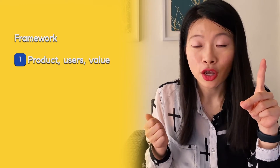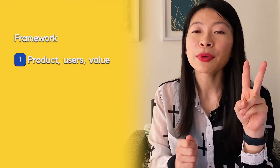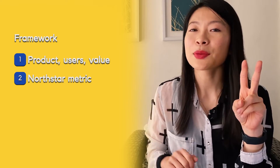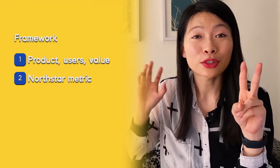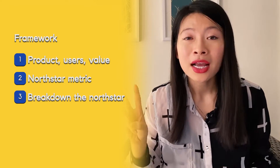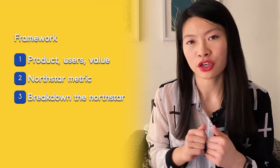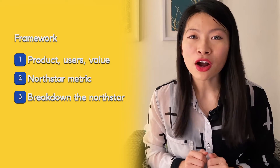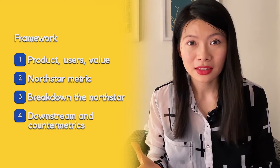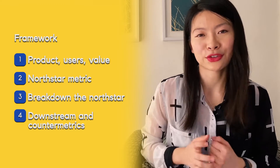To remind you of the framework: first, we're going to start off with understanding what the product is, who are the users, and what is the value to them. Number two, we're going to come up with a North Star metric — that's going to be the intersection of value between the users and stakeholders. Three, we're going to break down that North Star to come up with some health metrics that represent a healthy ecosystem. And number four, we're going to talk about downstream effects that this product will have in the larger Facebook ecosystem and some counter metrics.